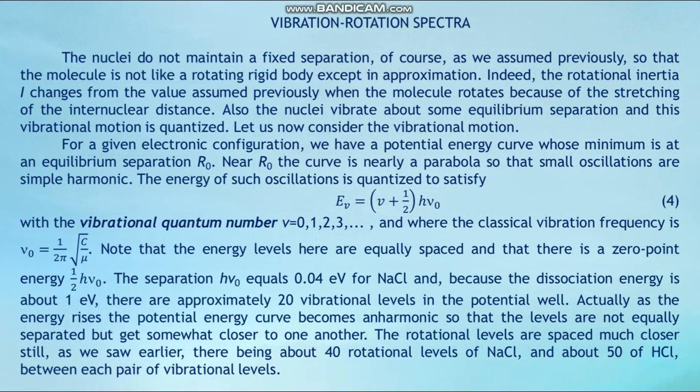The nuclei do not maintain a fixed separation, so the molecule is not like a rotating rigid body except in approximation. The rotational inertia I changes from the assumed value when the molecule rotates because of the stretching of the internuclear distance. The nuclei also vibrate about some equilibrium separation and this vibrational motion is quantized. For a given electronic configuration we have a potential energy curve whose minimum is at the equilibrium separation r₀. Near r₀ the curve is nearly a parabola so that small oscillations are simple harmonic.